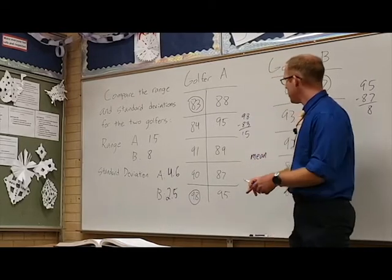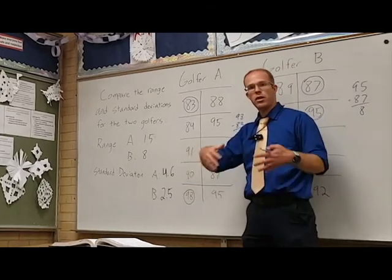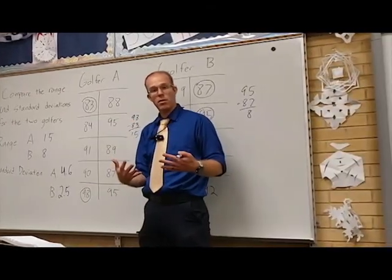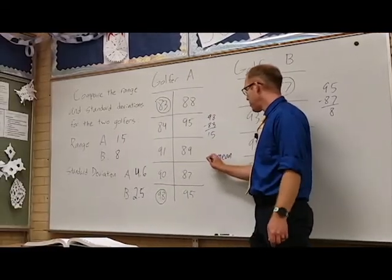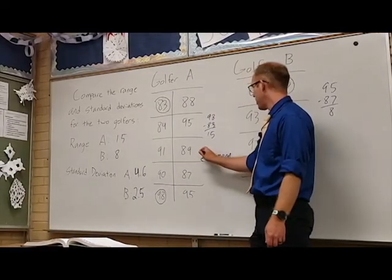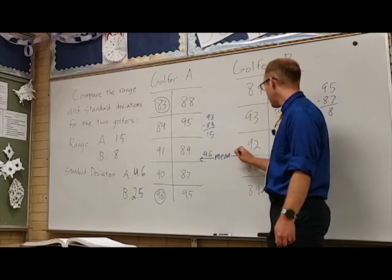But as you can see the scores go up and the scores go down. Standard deviation is designed to tell us how far we expect them to go up and down. So golfer A we expect to deviate from this mean by about 4.6, so that's 4.6 below and about 4.6 above.